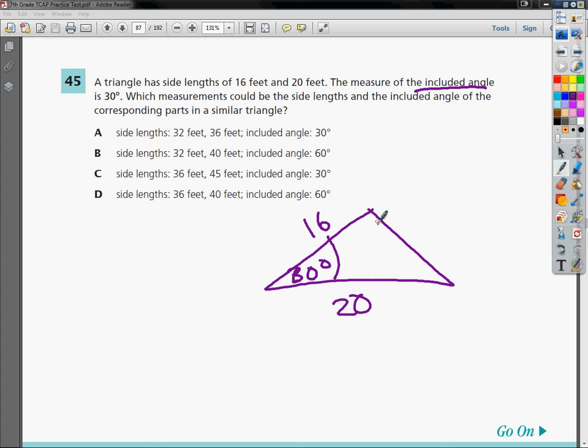So in B, they say that the included angle is 60 degrees. Well, in the original triangle, it's 30 degrees. So that cannot be the right answer. Same thing with D. It can't be the right answer because that 60 degrees has to be 30 degrees. Otherwise, they're not similar anyway.